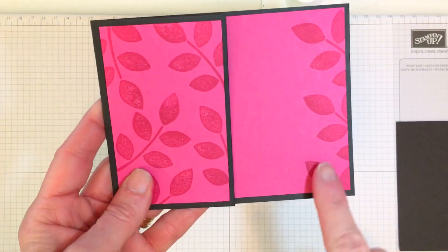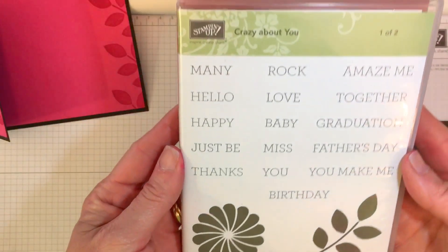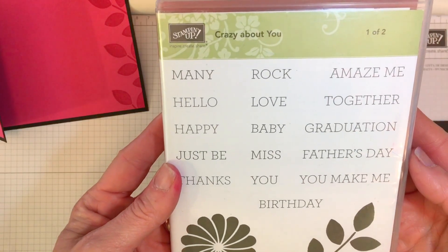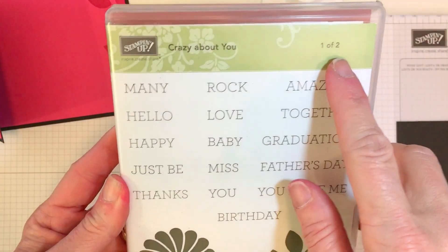I've got my little layering piece of 5 1⁄4 by 4. And then I have already stamped my leaves. The leaf came from the same stamp set as the medallion, and it's Crazy About You, which happens to be on the retiring products list this time around.